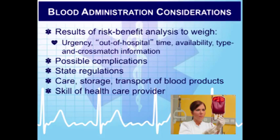Why would we give blood? We want to restore circulating blood volume because the patient is losing blood somewhere. We want to improve the oxygen-carrying capacity — red blood cells carry oxygen via hemoglobin, and if they don't have enough blood they won't get adequate oxygen-carrying components. There are also specific coagulation components that may be missing that we may need to give.